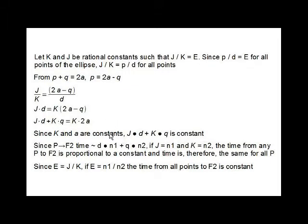Since K and A are both constant, JD plus KQ must be constant. This looks a lot like the optical path length. If J equals N1 and K equals N2, the optical path length is constant. Since E equals J over K, if E equals N1 over N2, the optical path lengths for all P to F2 are equal.